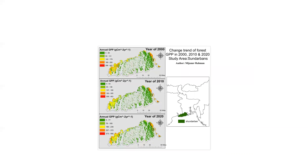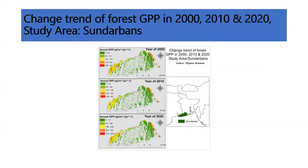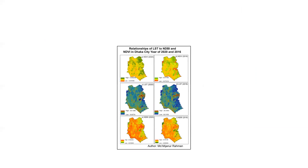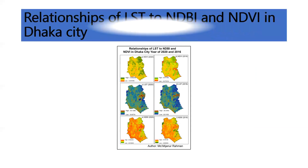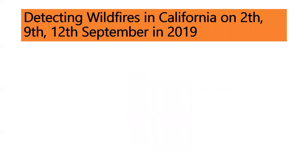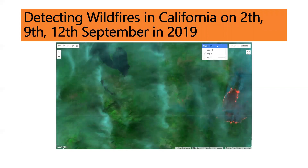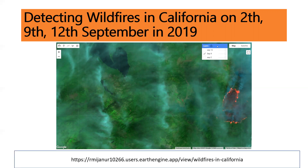This is another task showing the trend of forest gross primary production in the Sundarbans — part of our research work, made using Google Earth Engine, then downloaded as TIFF and mapped in ArcMap. This is another task for the relationship between LST, NDVI, and NDWI — another research paper using Google Earth Engine. This is another task for detecting wildfires in California — identifying fire conditions using Google Earth Engine, with a web application link for better viewing.